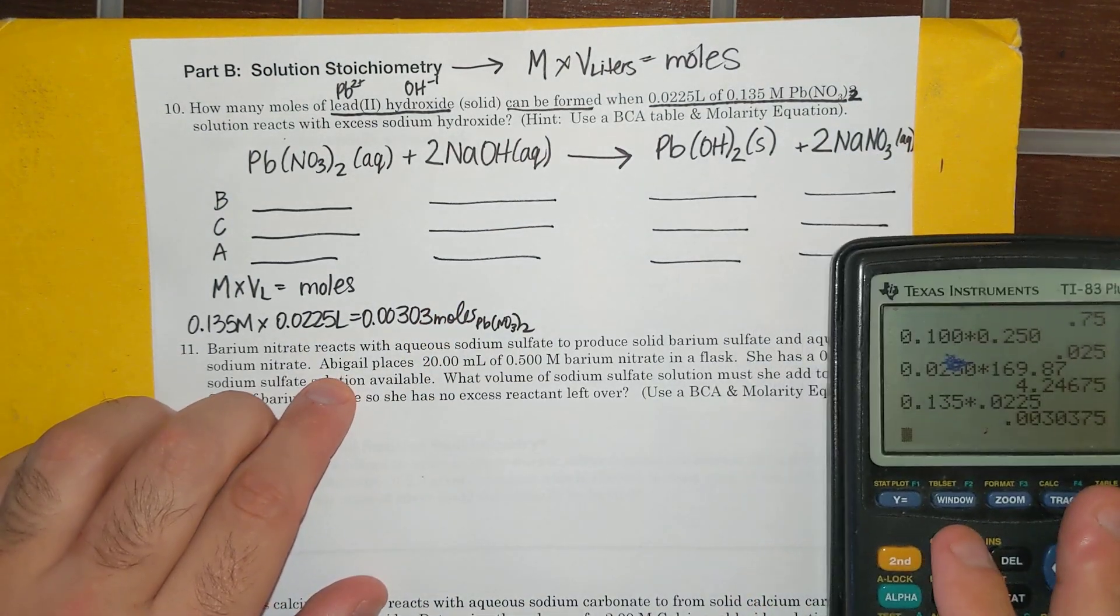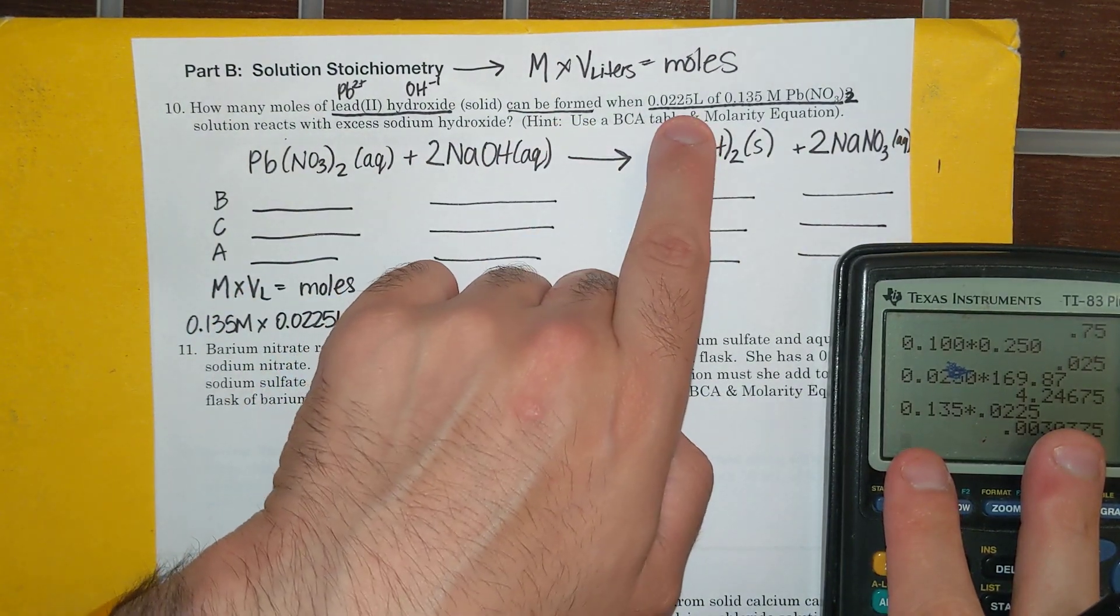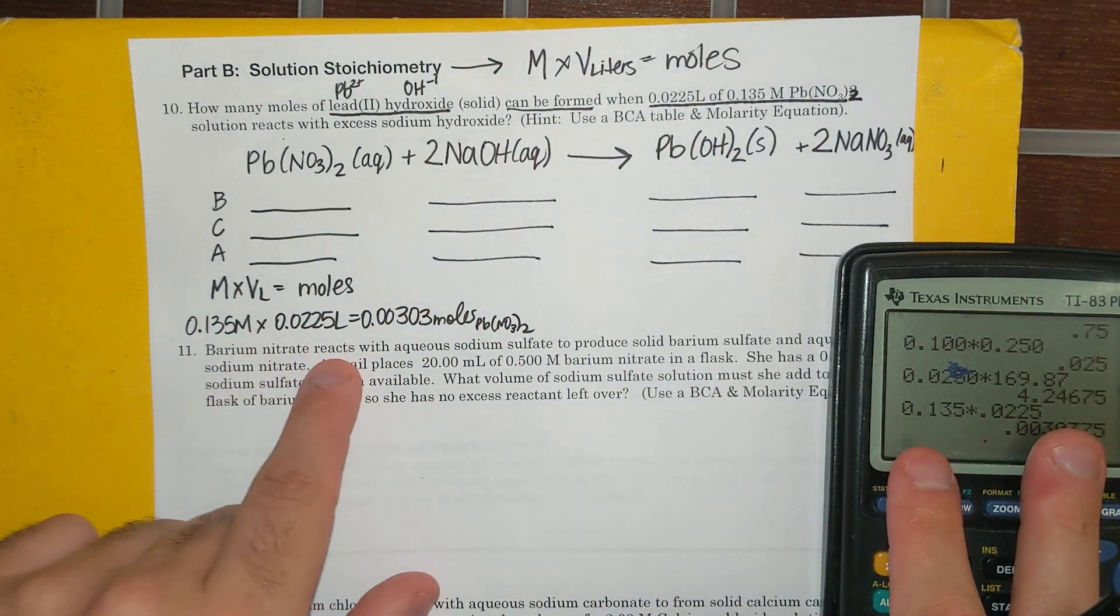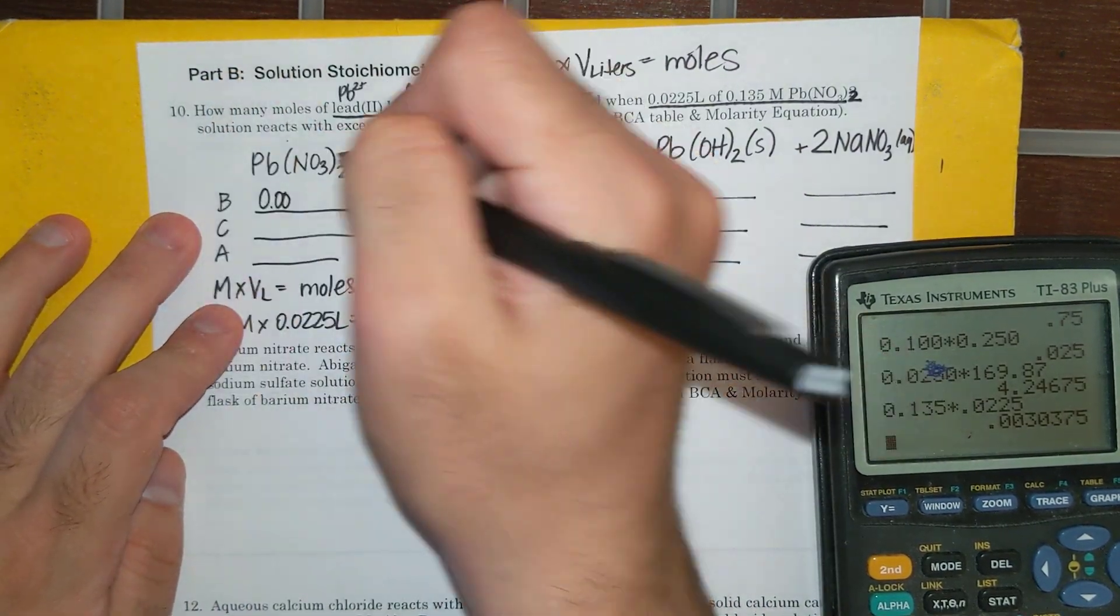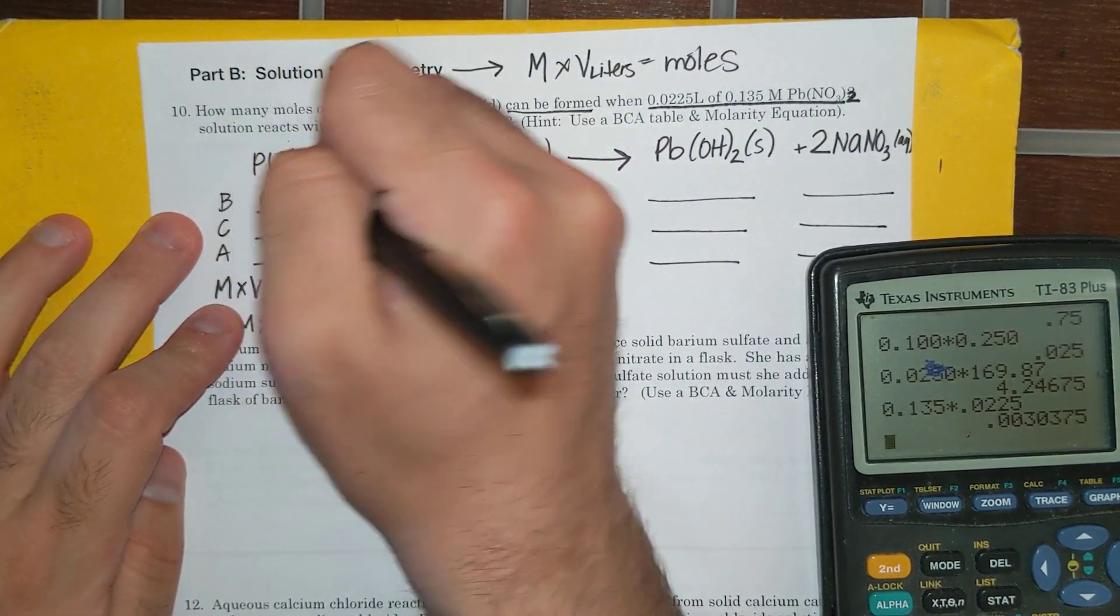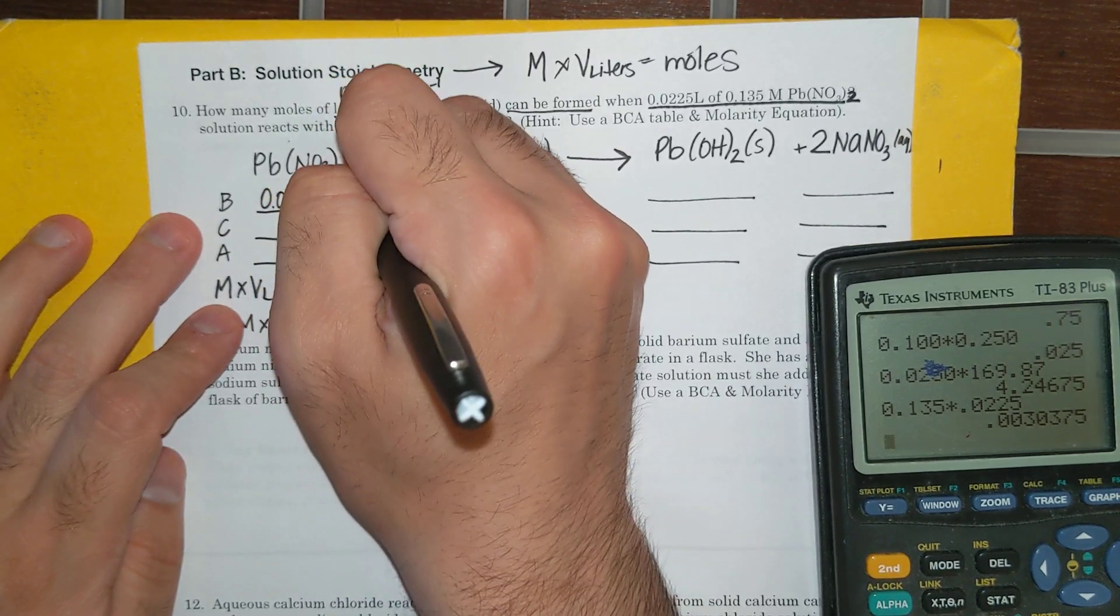Alright, so what did I do? My favorite equation, they gave me a volume and a molarity. I multiply those two together, and that gives me my moles, and I throw them right here.